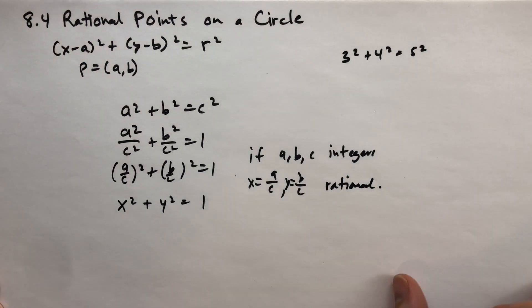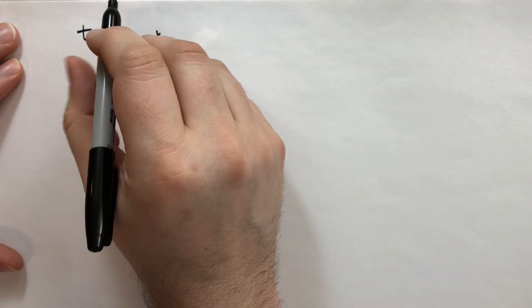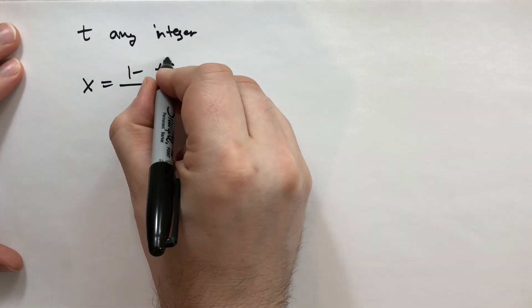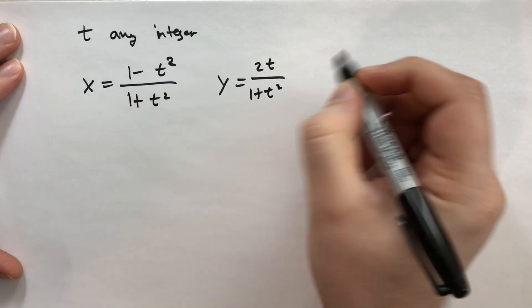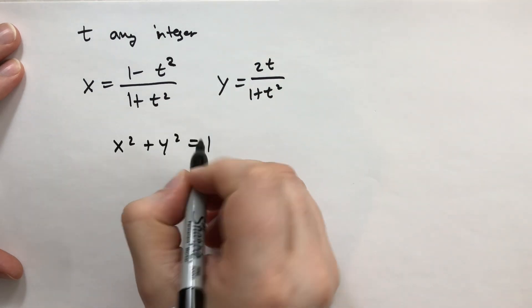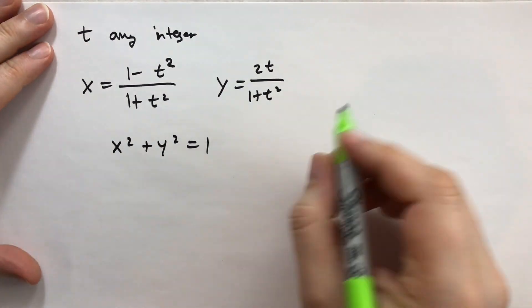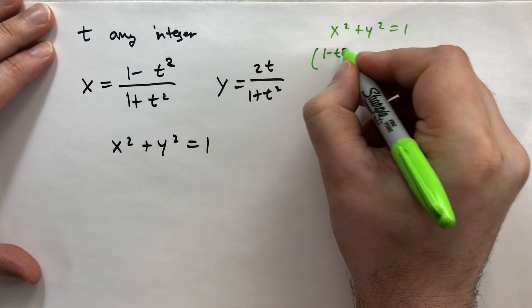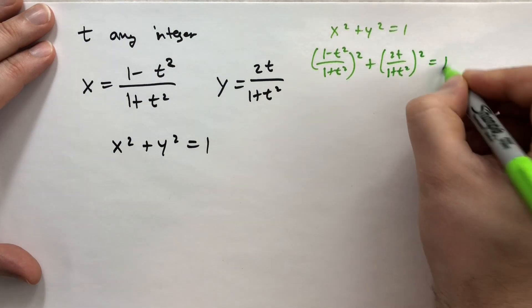He does a trick without immediately explaining why. He says: suppose x = (1 − t²) / (1 + t²) and y = 2t / (1 + t²). Then x² + y² = 1. We can do the algebraic manipulation to verify this. We're going to take x² + y² and substitute in: [(1 − t²)/(1 + t²)]² + [2t/(1 + t²)]² and see if that equals one.